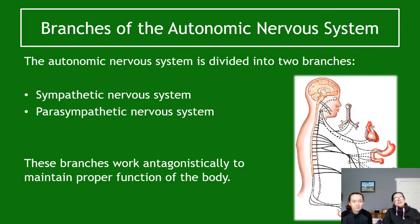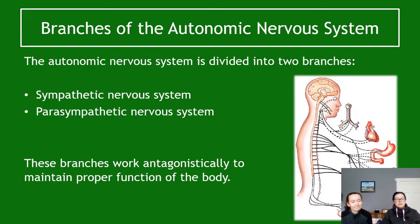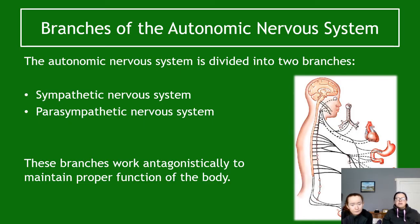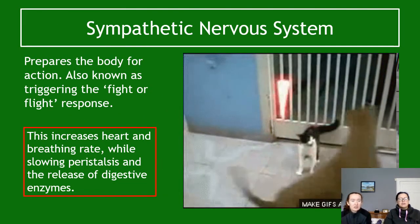The autonomic nervous system is further divided into two branches: the sympathetic and the parasympathetic nervous system. These two branches work antagonistically to maintain proper function of the body. Antagonistically means they have opposite functions — if the sympathetic nervous system speeds something up, the parasympathetic slows it down; if the parasympathetic widens something, the sympathetic narrows it. You need to be familiar with that word 'antagonistically.'